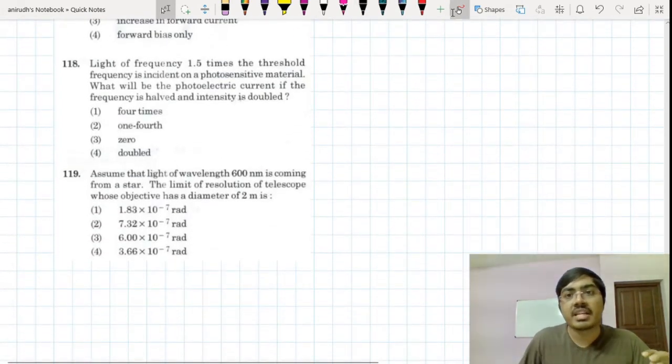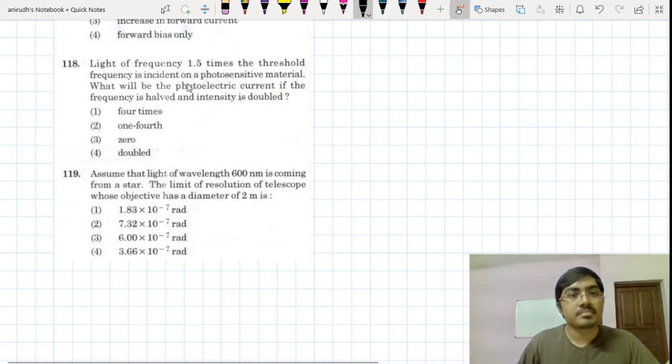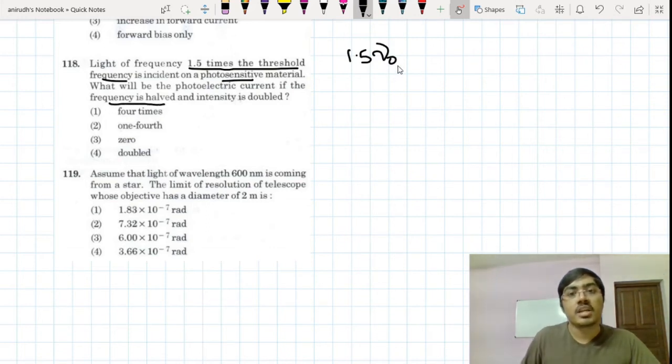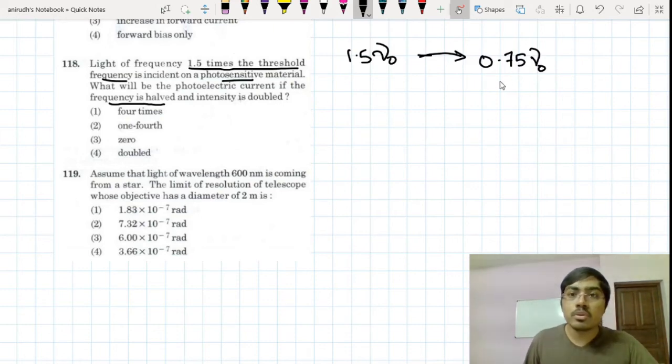Dual nature of radiation and matter. The concept of photosensitivity has been utilized for framing this question. Light of frequency 1.5 times that of threshold frequency. If my threshold frequency is this much, this is 1.5 times nu naught. Now what are they saying? They are saying that the frequency is halved. Now if you divide this by 2, it becomes 0.75 nu naught. Now is it less than nu naught? Yes.